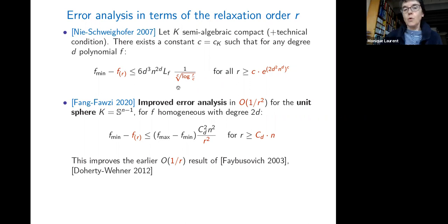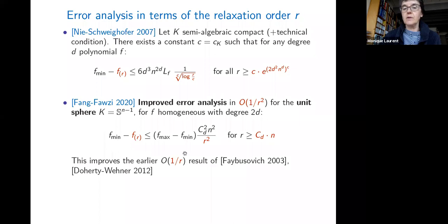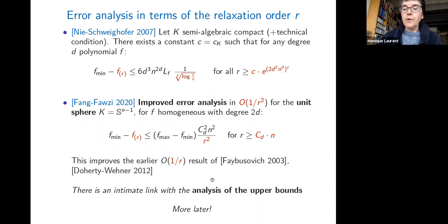One would hope for a better estimate. A result by Fang and Fazzi in 2020 shows the right error analysis is 1/r² for polynomial optimization over the unit sphere. There is also an intimate link between the analysis of the sum-of-squares lower bounds hierarchy and the analysis of the upper bounds hierarchy I am about to define.